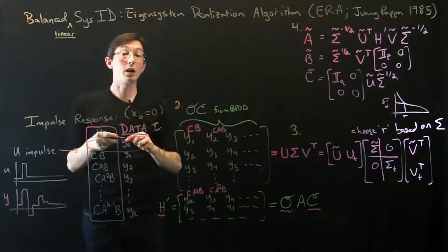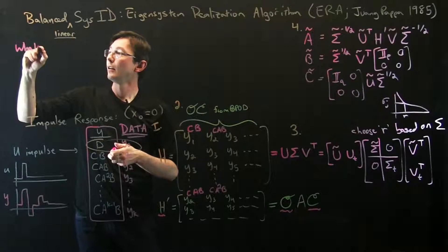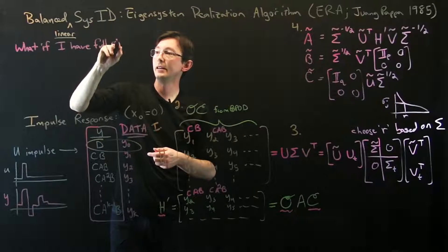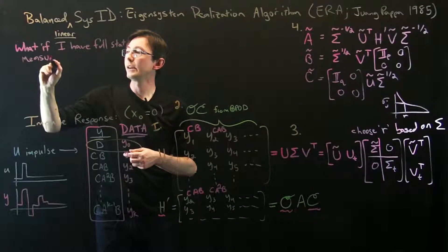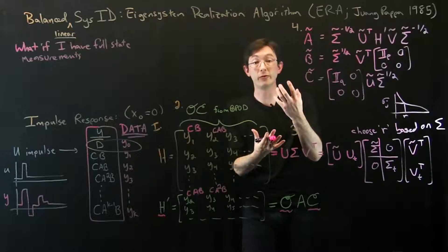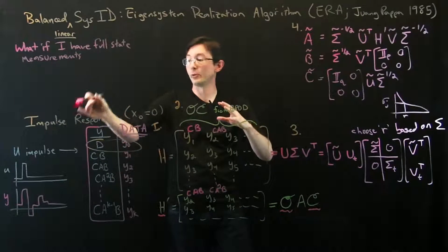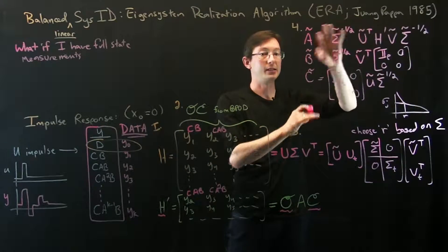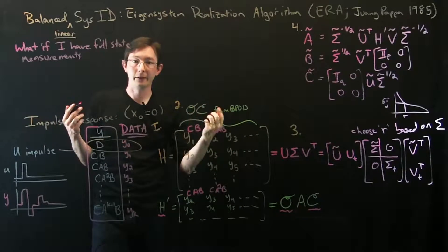But there's a more concrete connection to balanced POD: what if I have full state measurements? So we assumed that there's some underlying linear system with some true full state X that we probably can't measure, but we can just measure input and output data and we're trying to approximate those dynamics in terms of some proxy state X tilde that's low dimensional. But what if I actually have real data?